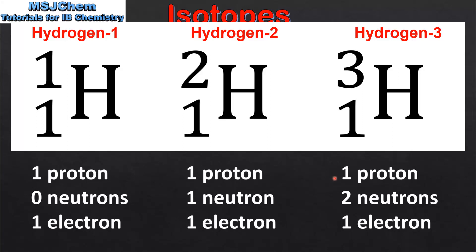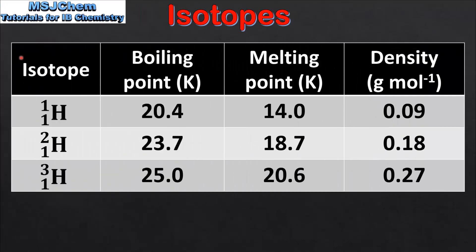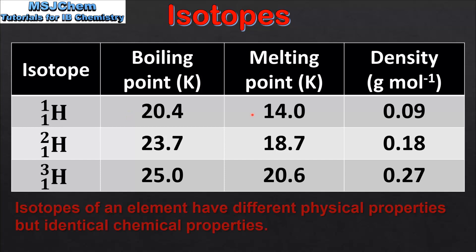So once again we can see that each isotope has the same number of protons but a different number of neutrons. Next we will look at the difference in the physical properties of the hydrogen isotopes. Starting with boiling point, we can see that it is different for the three isotopes, and as the mass number of the isotope increases so does the boiling point. We also see the same trend for the melting point and density, where the heavier isotopes have higher melting points and higher densities. So the physical properties of the isotopes are different, and this is because each isotope has a different mass number.